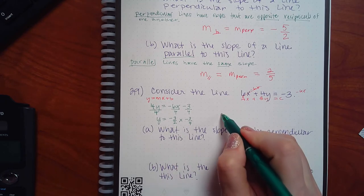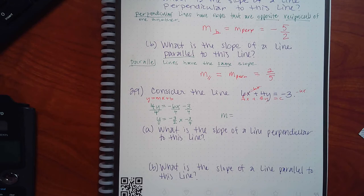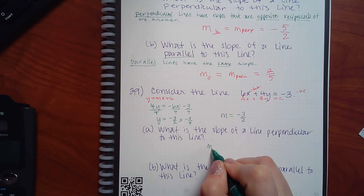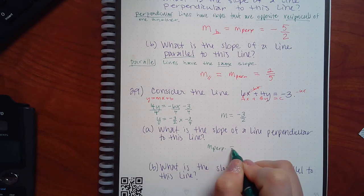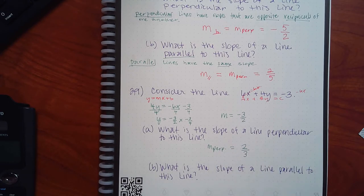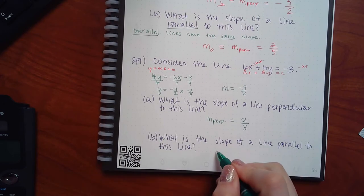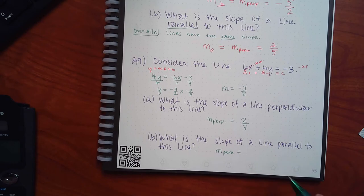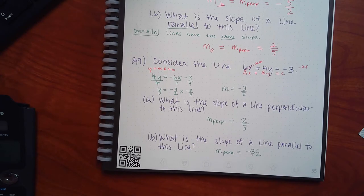Now I can identify my slope: it's negative 3 over 2. So the perpendicular slope would be positive 2 over 3 — it was negative so it has to become positive, and the fraction is flipped. The parallel slope is the same as the original: negative 3 over 2. It just required a bit more work because the equation wasn't in the right form.